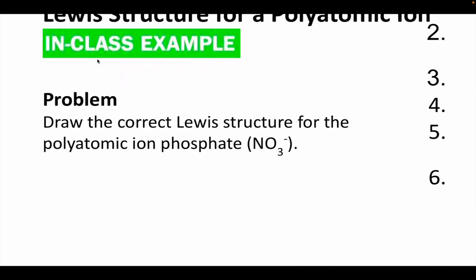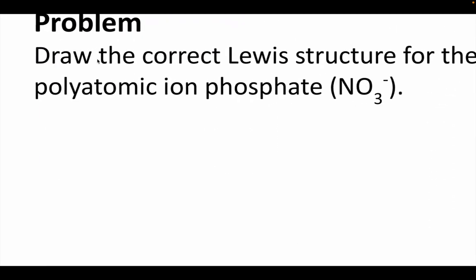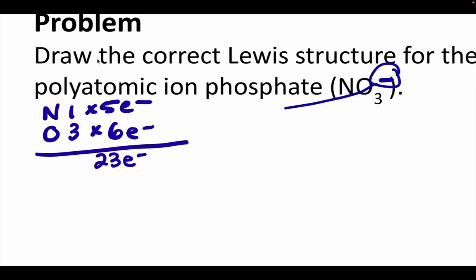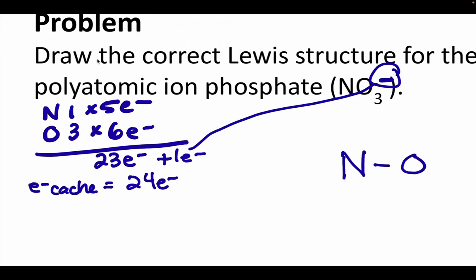Let's do one more. This one is for nitrate. It's hard to tell, but it does have a negative 1 charge. If you want to try doing it, pause it, and then see how you do. I'm going to calculate the cache. I get 23. I'm going to add one electron. So my electron cache is really 24. Then I'm going to put nitrogen in the middle.